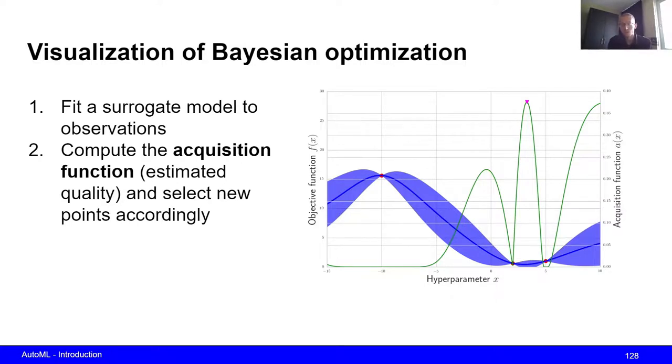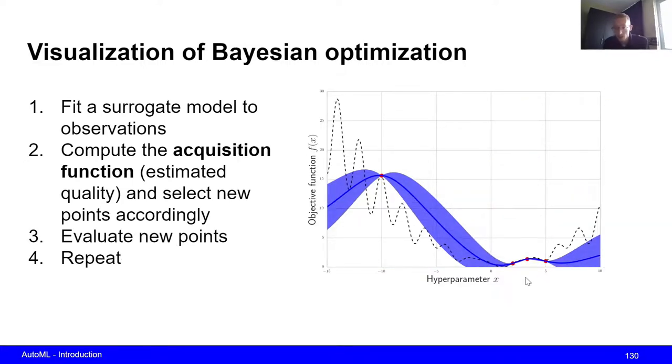All right, but once we have computed this acquisition function, what we can do is we can simply evaluate the new hyperparameter configuration with the highest expected quality estimate. So in that case, that would be this point right here.